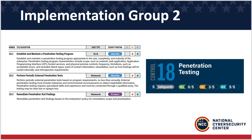There are no IG1 safeguards here. Looking at implementation group 2: have a program, do the tests, and remediate the findings. Remediating penetration test findings is one of the most critical elements of reducing risk.